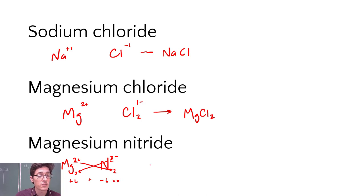You can take those charges and switch them. They crossover. So our correct formula for magnesium nitride is Mg3N2. This is a neutral ionic compound.